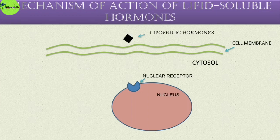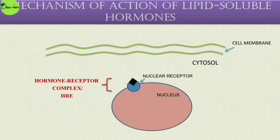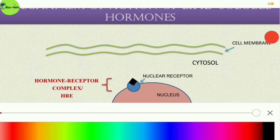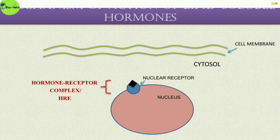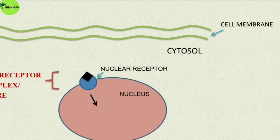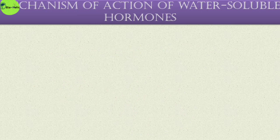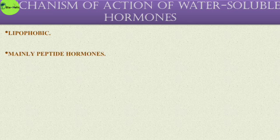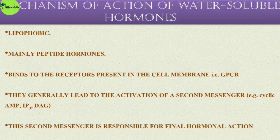Now, let's understand the mechanism of action of lipid soluble hormones once more. Lipid soluble hormones can enter the cell directly and form a hormone-receptor complex, also called a hormone response element. This complex then causes various cellular changes to produce the ultimate physiological response. For water soluble, lipophobic hormones such as peptide hormones, they use the G protein coupled receptor and generally lead to activation of second messengers like cyclic AMP, IP3, and DAG.